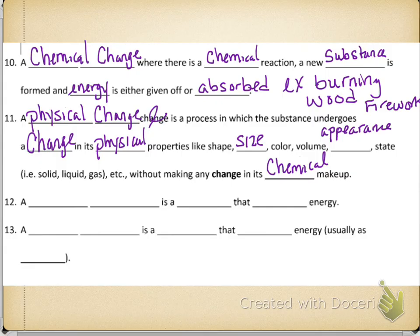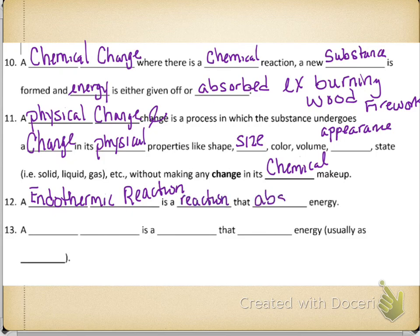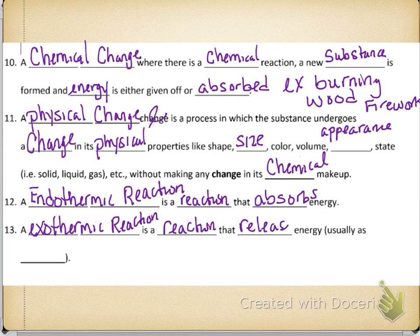And then things that go with those are going to be two other types of reactions. Endothermic reaction is a reaction that absorbs energy. Endo, think of it like on the inside. Thermic would be heat, which is energy. And endo would be on the inside. And so the other one would be an exothermic reaction and exo think external. It's a reaction that releases energy usually as heat.